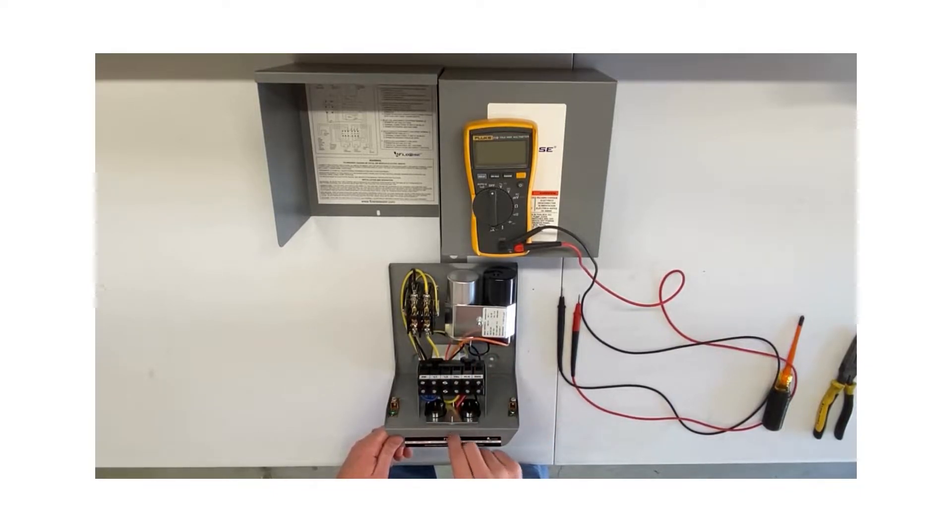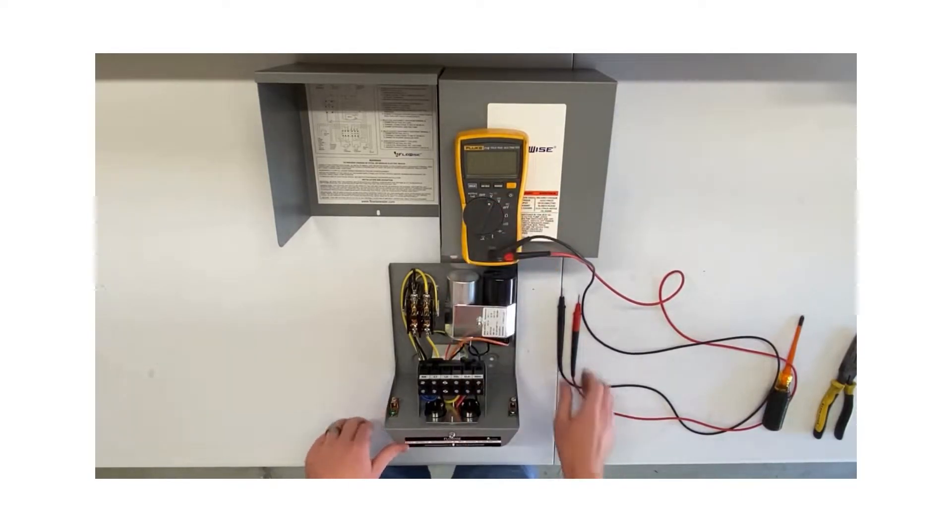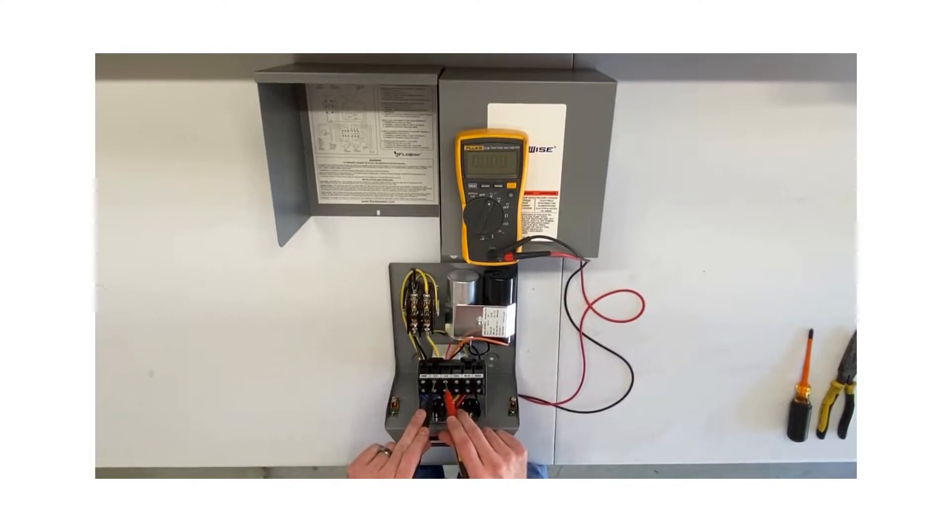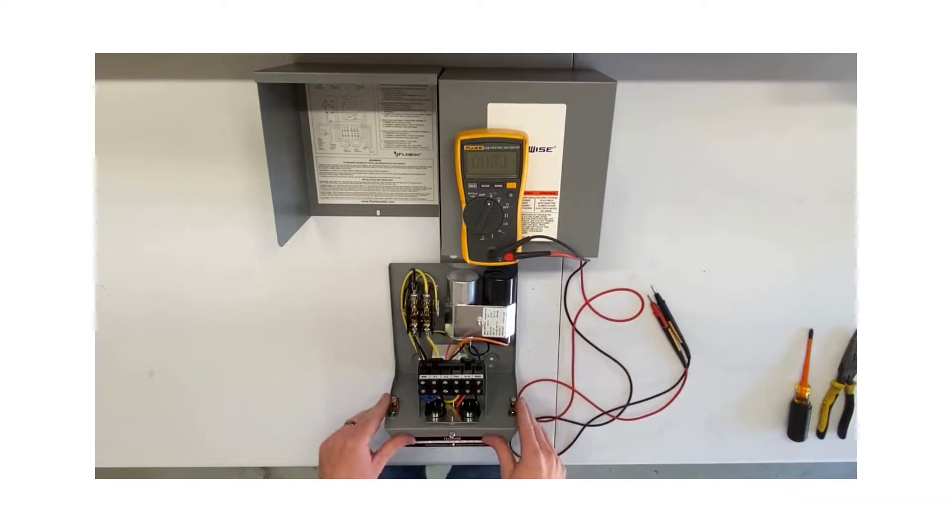After you have turned it off at the breaker, go ahead and take the cover off the box. I like to take the screw that holds the lid on and put it back into the base of the box so I don't lose it. Once I have the cover off, I'm going to take my multimeter, set it to AC volts, and check L1 to L2 and ground to L1 and L2 to make sure I don't have any voltage. That way I know I'm safe to test inside this box now.